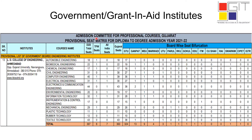Now let's see how you can check your provisional seat matrix. In this circular you will find all the government and private institutes. Let's take one example of a government grant-in-aid institute — I have taken the example of LD College of Engineering.